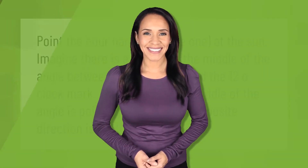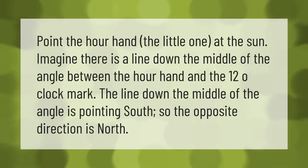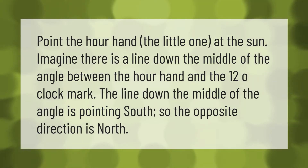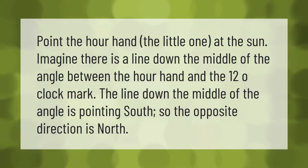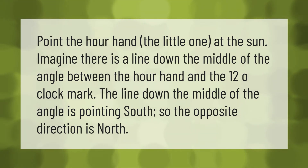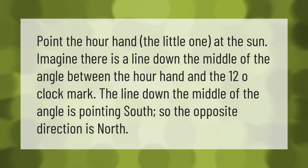Point the hour hand — the little one — at the sun. Imagine there is a line down the middle of the angle between the hour hand and the 12 o'clock mark. The line down the middle of the angle is pointing south, so the opposite direction is north.